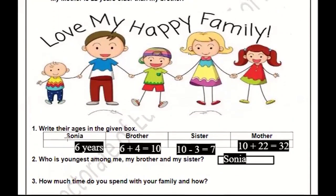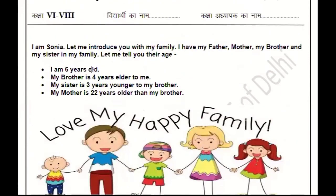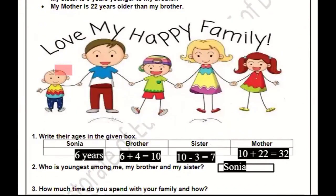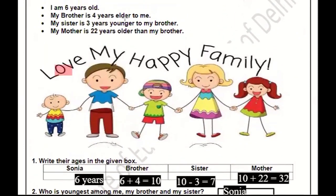The first question is: What is the age of Sonia? As we have seen earlier, Sonia's age is 6 years. Brother's age was 4 years older than Sonia, so 6 plus 4 equals 10 years. Sister's age is 3 years younger than brother, so 10 minus 3 equals 7 years.